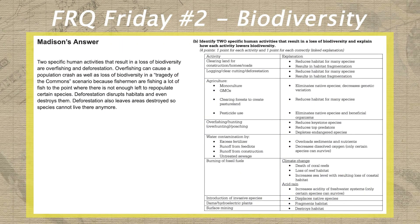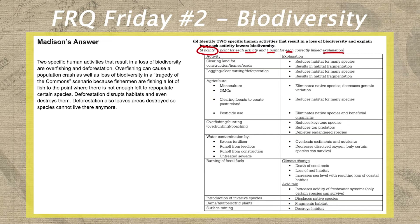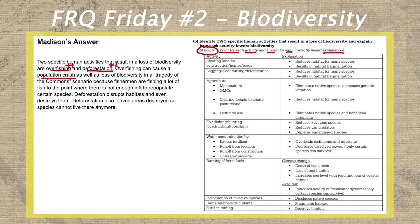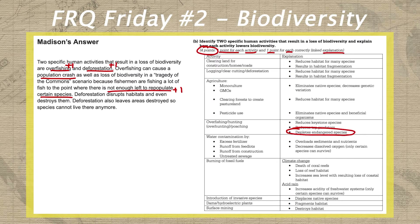In part B, we have a lot to watch out for because this is a four-point answer — two points for identifying two human activities, and two additional points for explaining how each activity lowers biodiversity. Madison starts off strong, earning two identification points: one for overfishing and the second for deforestation. For overfishing, she states that it can cause population crash and that it leads to not enough fish left to repopulate certain species — a great explanation that earns a point, specifically connecting overfishing to lowering species diversity. For deforestation, she states it destroys habitats so species cannot live there, a clear connection to biodiversity loss, earning her a fourth point in part B.